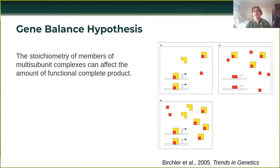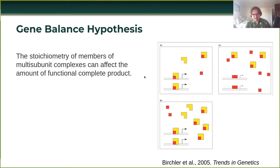The main idea of the gene balance hypothesis is that the stoichiometry of members of multisubunit complexes — complex protein multimers — can affect the amount of functional complete product. We can see this sketched out in the cartoon to the side here. On the top left in panel A, you have a dimer composed of the yellow and the red component. Here we have an equal amount of yellow and red parts, and we produce enough to bind in cis and affect expression.